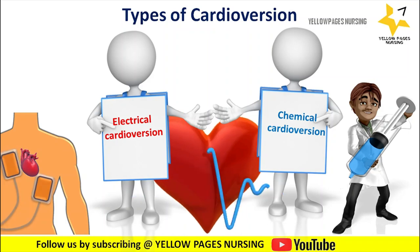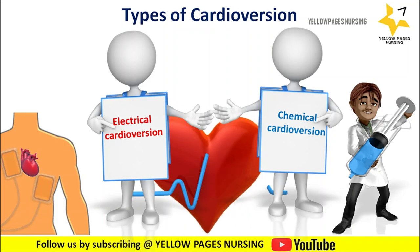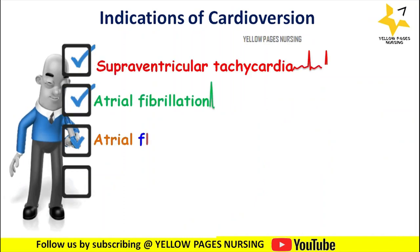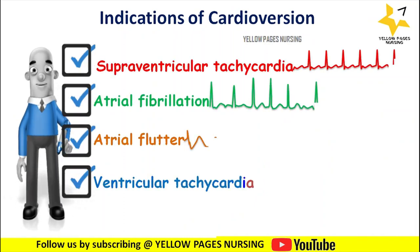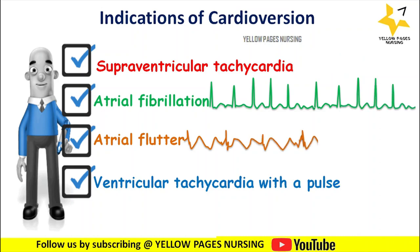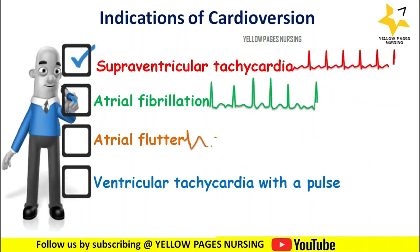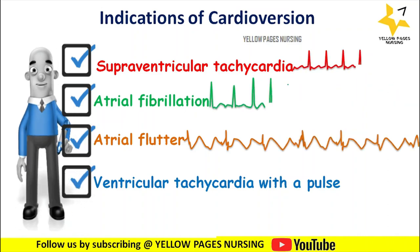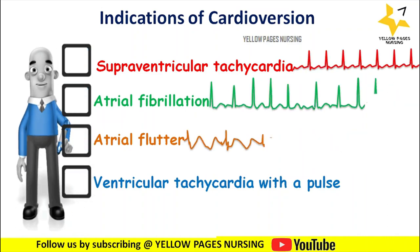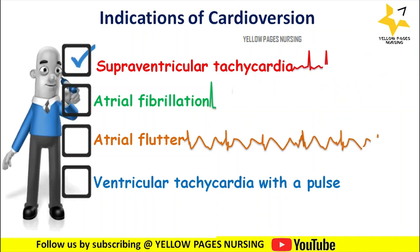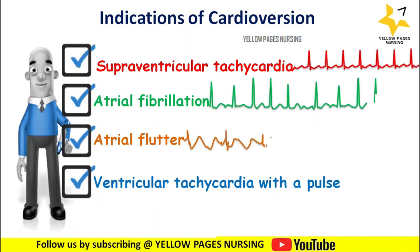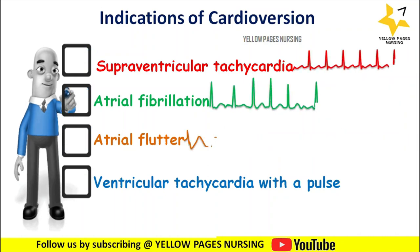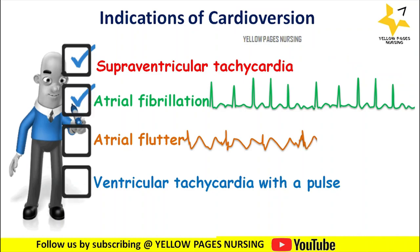Indications for cardioversion include supraventricular tachycardia, atrial fibrillation, atrial flutter, and ventricular tachycardia with a pulse. Contraindications include arrhythmias due to digitalis toxicity, sinus tachycardia, and ventricular fibrillation.